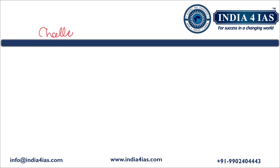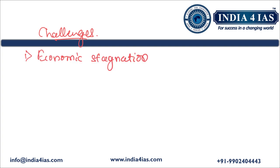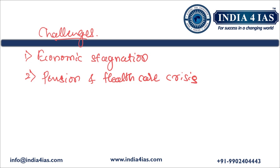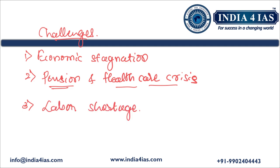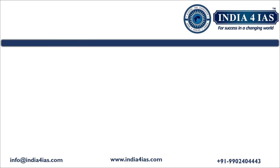After writing this, we should briefly mention the challenges of demographic winter. First is economic stagnation — example: Japan. Second is pension and health care crisis — as the aging population increases, the government must pay more pensions and address the needs of elderly people. Third is labor shortage — due to a decline in youth population, there is a shortage of labor, examples being South Korea and Japan. Instead of a conclusion, we should write way forward.